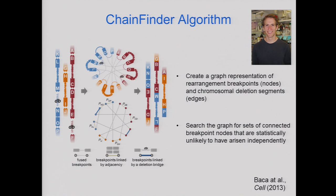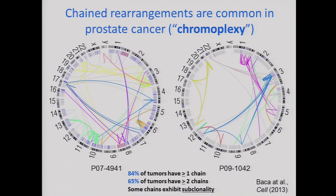When he applied this to a much larger set of prostate cancer genomes — about 57 whole genomes funded by the NHGRI — he found that these events are incredibly common: 84% of primary prostate cancers have at least one chain. We decided we needed to give it a new name — we gave it the name Chromoplexy. These are circus plots where different color codes are different chains detectable within an individual genome.